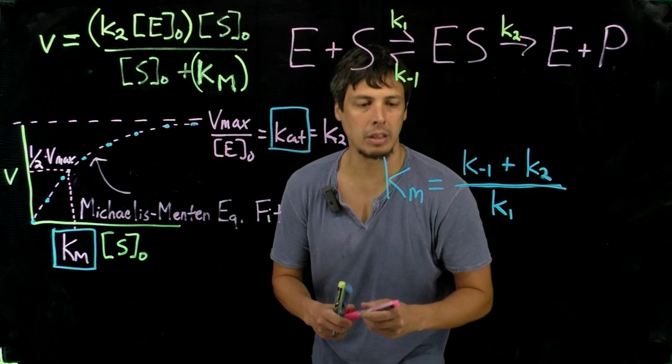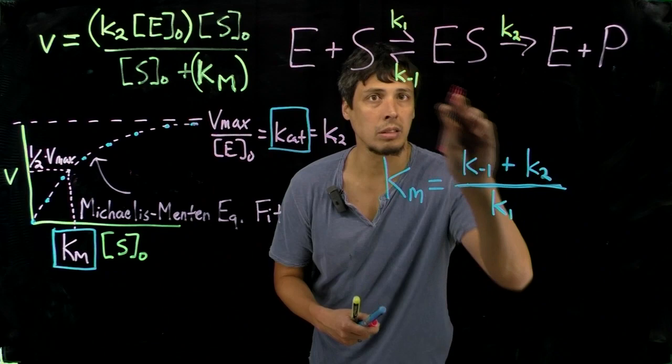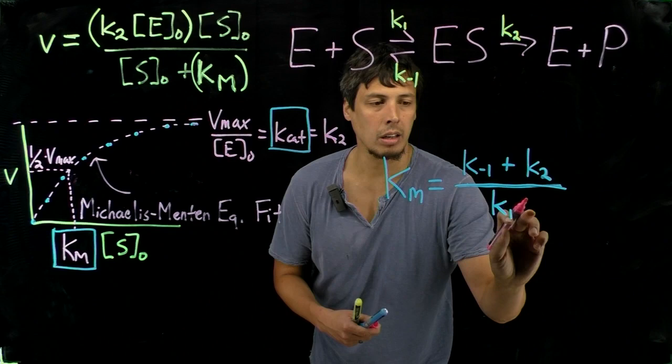However, it's important to note that these are not the same, because Km is equal, again, to the numerator contains rate constants for consumption of ES, while the denominator contains rate constants for its formation.